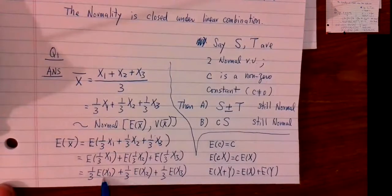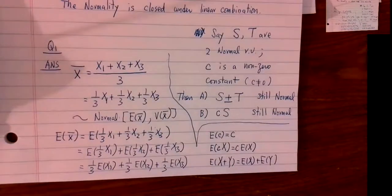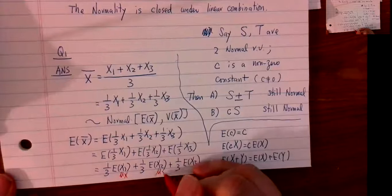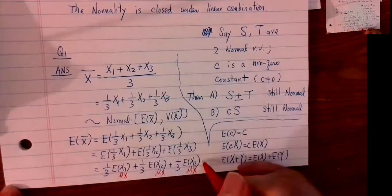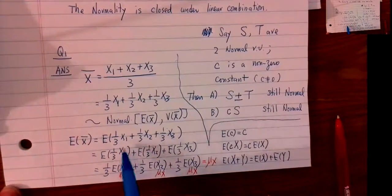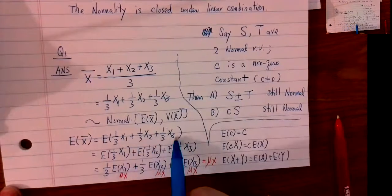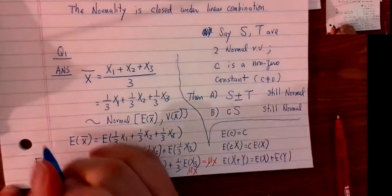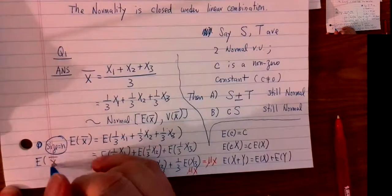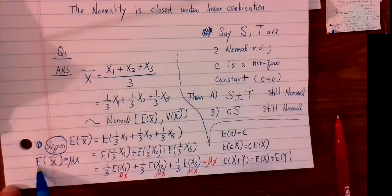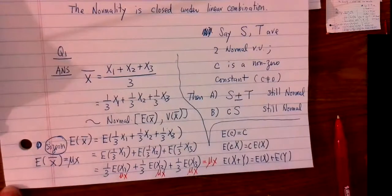Each expected value equals μx, because all three share the same mean — that's what 'identically distributed' means. So we get 3·μx divided by 3, which is just μx. Similarly, this result is not restricted to n=3; for any sample size n, E[x̄] always equals μx. The mean of the sample means equals the population mean.